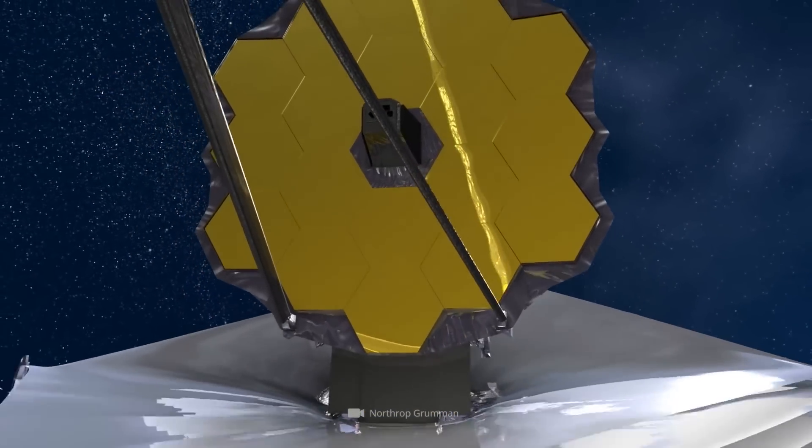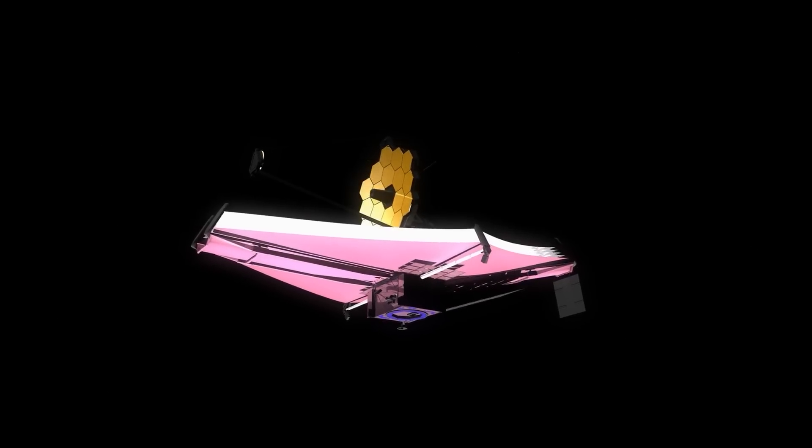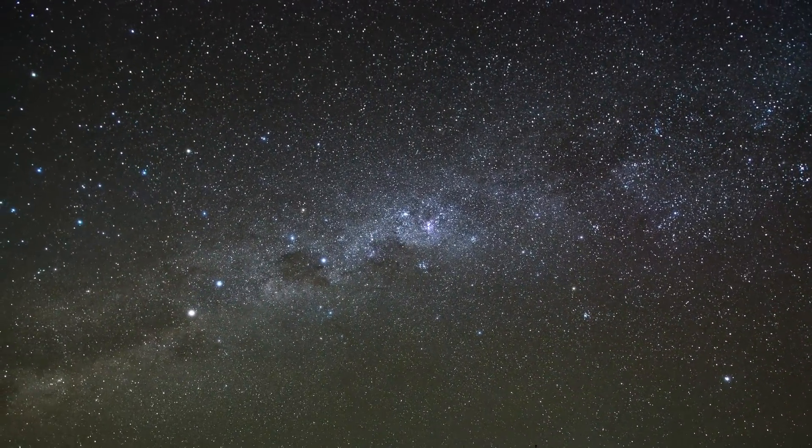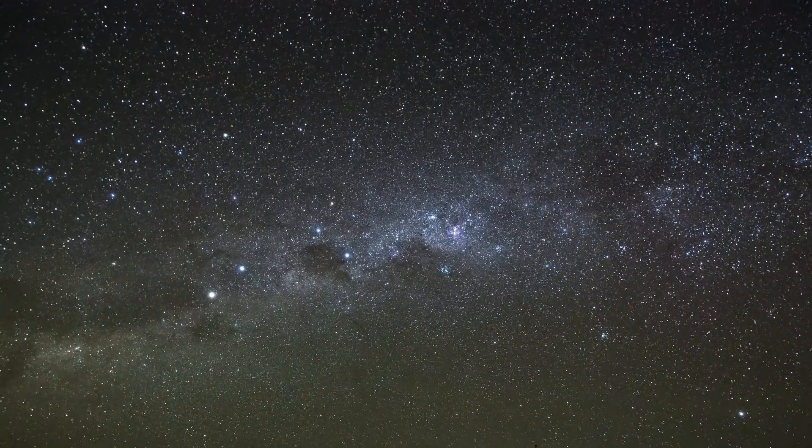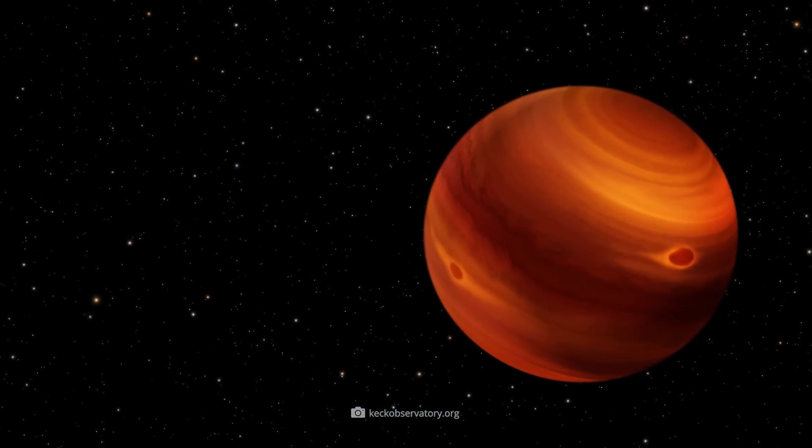The Webb Telescope detects light in a completely different bandwidth than the Hubble Telescope or other comparable observatories. Webb captures infrared signals and analyzes these waves with four special spectrometers. Brown dwarfs revealed their mysterious glow in the infrared range.